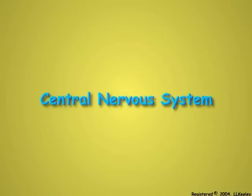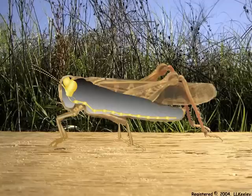The insect nervous system conveys and integrates information about the internal and external environments and determines insect behavior. The central nervous system consists of the brain and the ventral nerve cord.